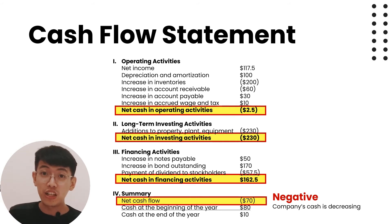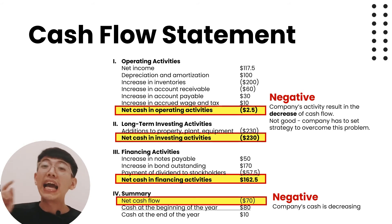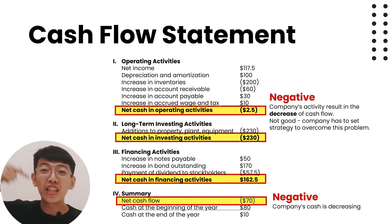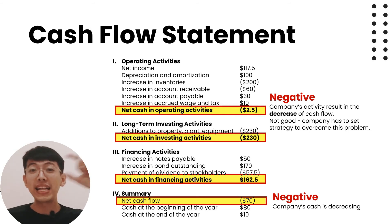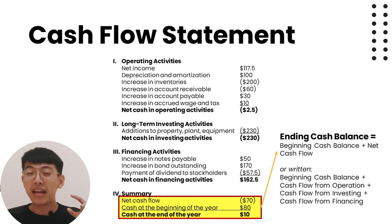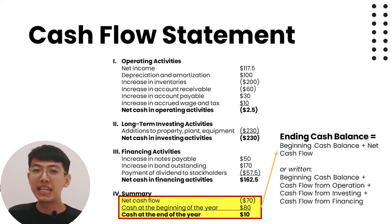The net cash flow is decreasing, which means the company's cash is decreasing. Also, the CFFO or operating cash flow is negative, meaning the company's operations are resulting in a decrease of cash flow. This is not good for the company, so the company has to set a strategy to overcome this problem.